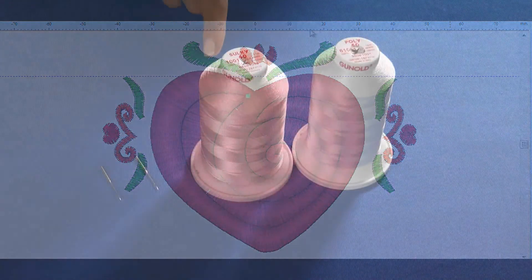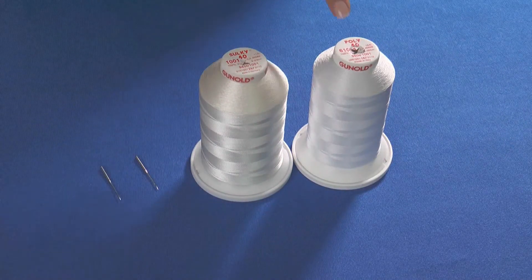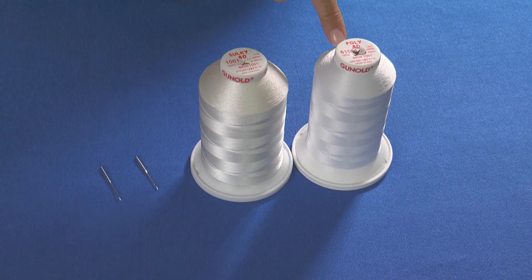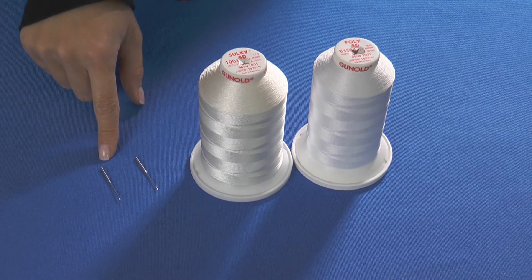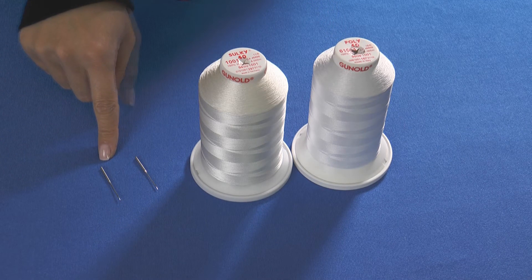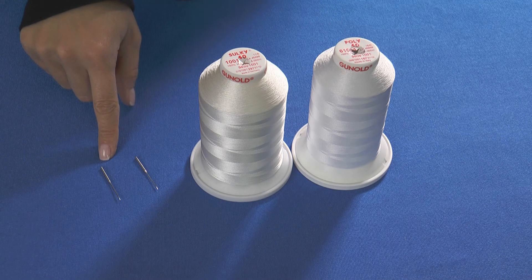When stitching puffy, rayon or polyester thread may be used. A light ballpoint needle type SES is recommended rather than a sharp point because the point is slightly larger resulting in better perforation.